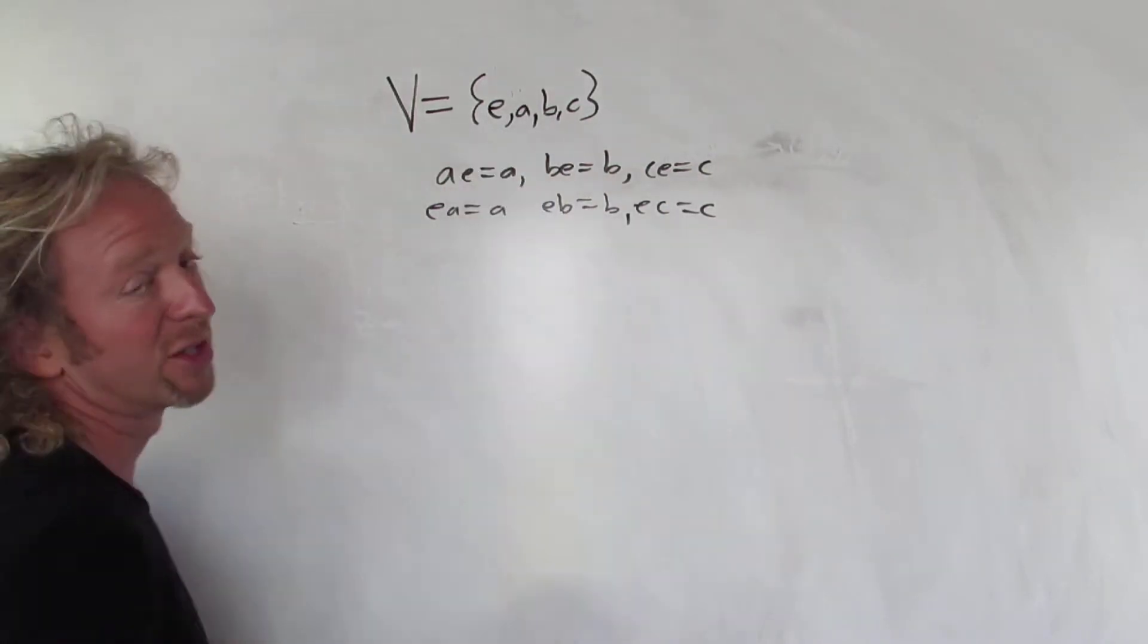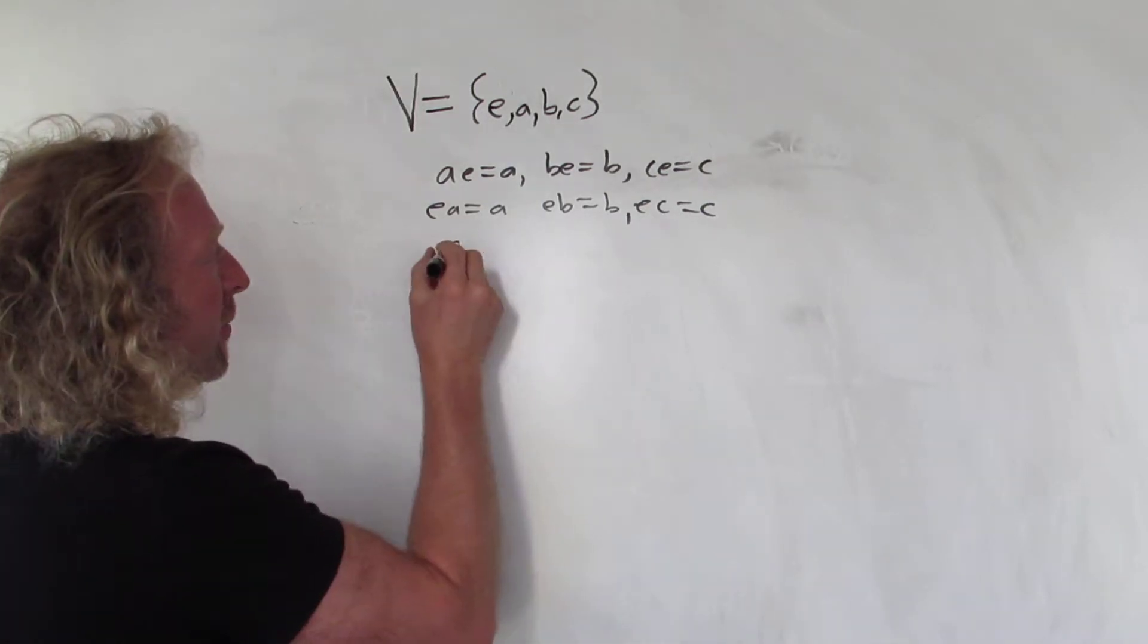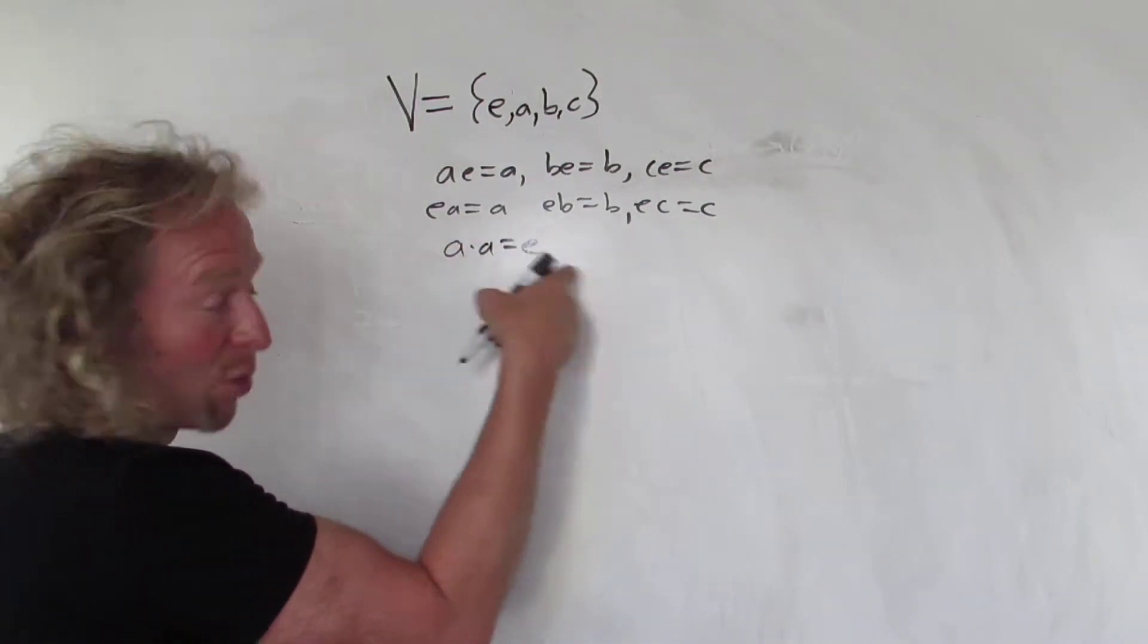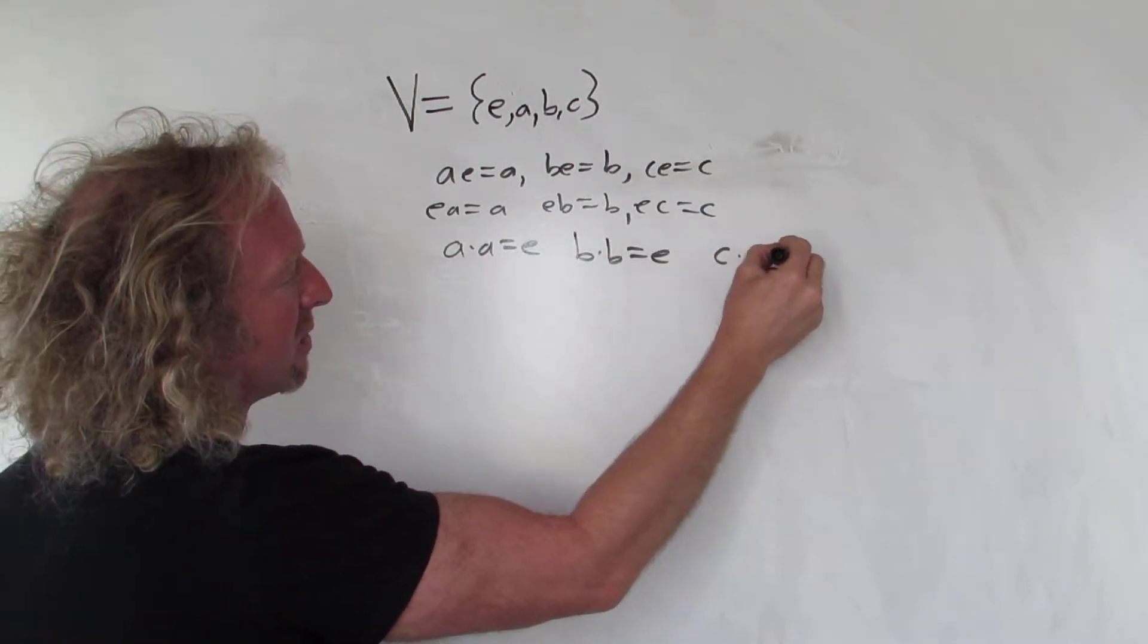Every element has order two, so if you take any element and multiply it by itself, you get the identity. So for example, AA is E, so A squared is E, BB is E, and then CC is also E.